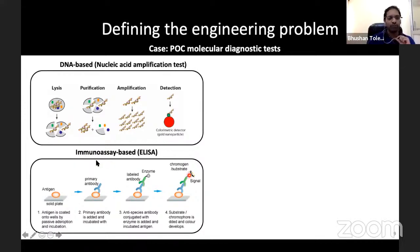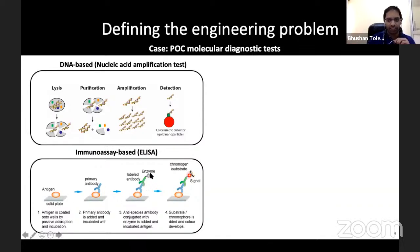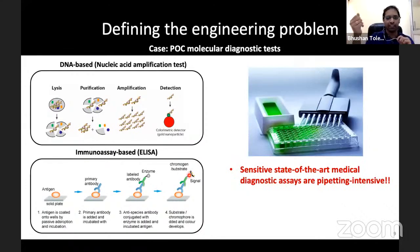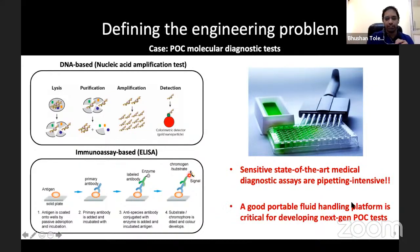Similarly, for an immunoassay-based ELISA — used for COVID antigen and antibody testing in labs — the antigen attaches to a solid plate, an antibody is added, a secondary antibody tagged to an enzyme is added, and then a substrate that changes color when exposed to the enzyme is introduced. All of these are multi-step reactions. Sensitive medical diagnostic testing is often pipetting-intensive or involves multiple steps, and without automation these are very hard to do without skilled labor.